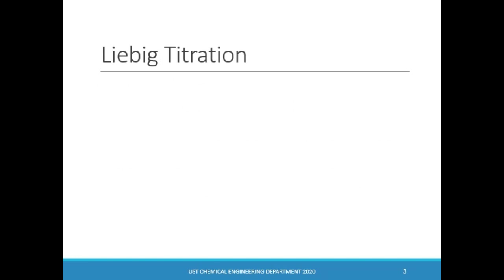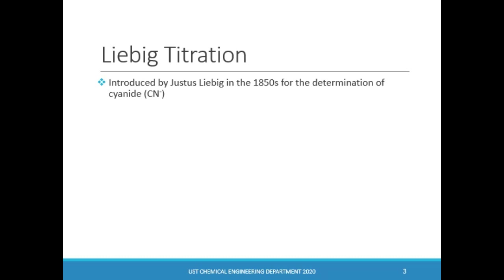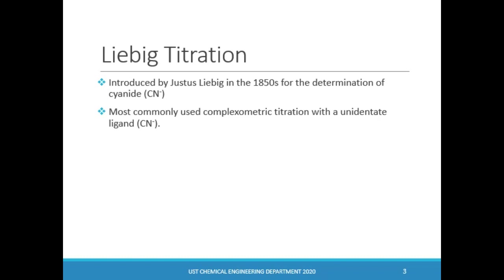One of the earliest metal-ligand complexometric titrations was introduced by Justus Liebig in the 1850s to determine the amount of cyanide present in a solution, and thus the name Liebig titration. Because of its stability and capacity to form a single and easily identified endpoint, it has since become one of the most widely used complexation titrations, which involves a unidentate ligand.